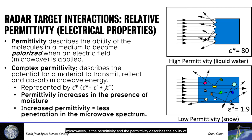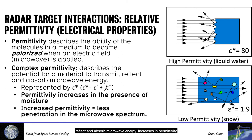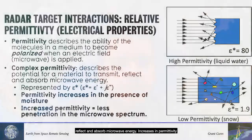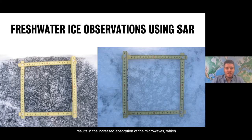The other property that affects backscatter in terms of microwaves is the permittivity. Permittivity describes the ability of a material's molecules to become polarized when an electrical field or microwave is applied to it. The complex permittivity describes the potential for a material to transmit, reflect, and absorb microwave energy. Increases in permittivity result in increased absorption of microwaves, which means lower backscatter.